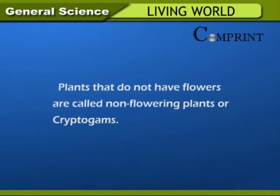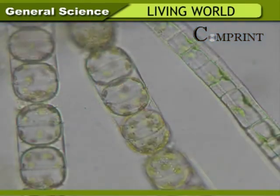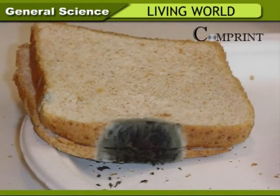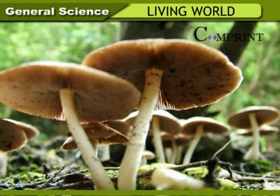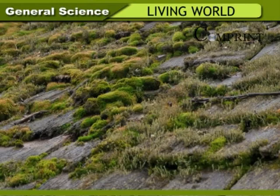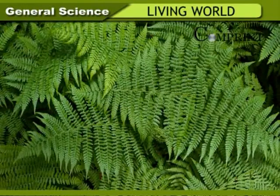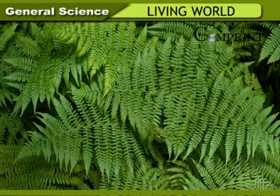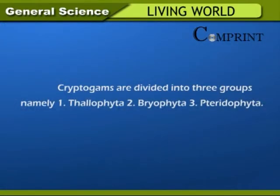Non-flowering plants or cryptogams include green algae that grow in water, fungi that grow on food materials, mushrooms that grow on garbage heaps, soft bryophytes growing on wet walls, and fern plants used as ornamental plants. Cryptogams are divided into three groups: 1. Thallophyta, 2. Bryophyta, 3. Pteridophyta.